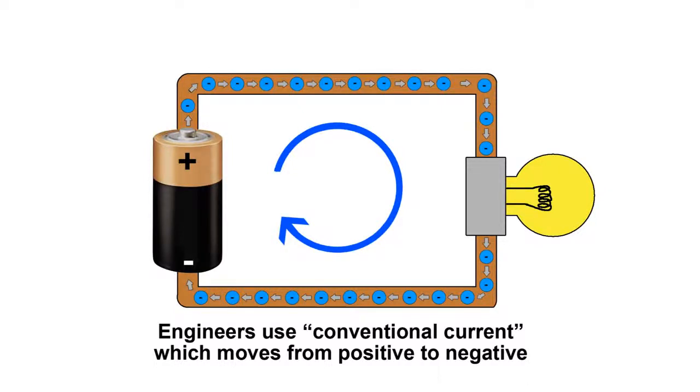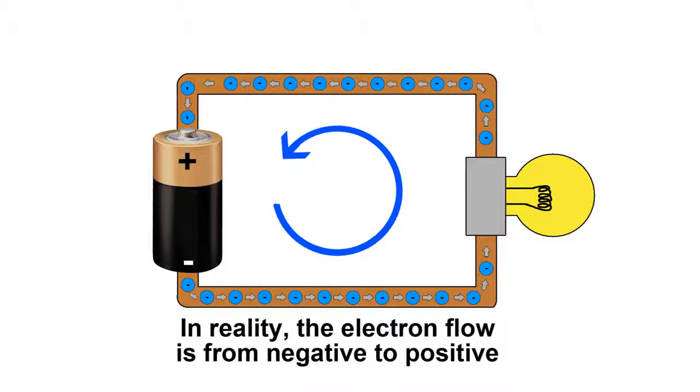This system of current flowing from positive to negative is what all electrical engineers use, and it's called conventional current. However, conventional current is wrong. Back in the early days when scientists were still figuring out the basics of electricity, they didn't know whether it was the protons or the electrons that were flowing. They made a guess and thought that current flowed from positive to negative, but the reality is that the actual flow of electrons goes from negative to positive.